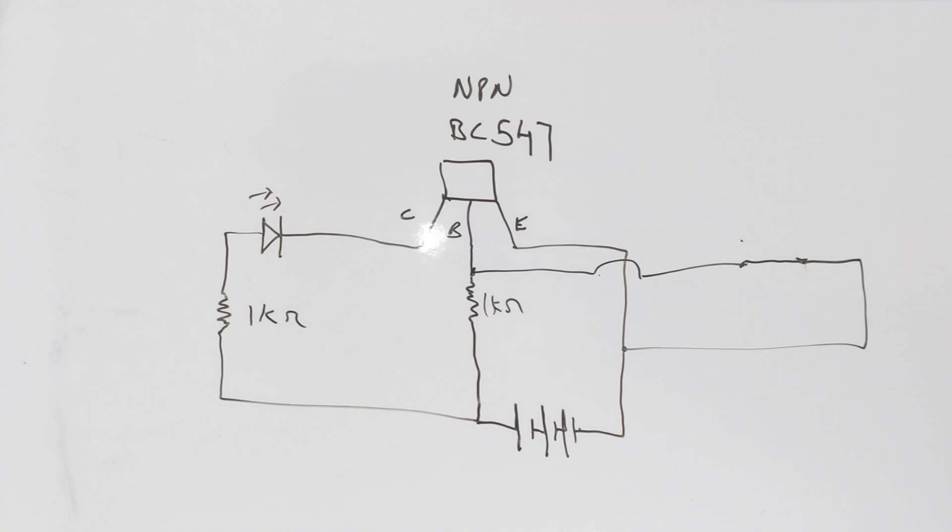Now current goes through the positive terminal of the battery, goes to the resistor, and goes back through the negative terminal of the battery.